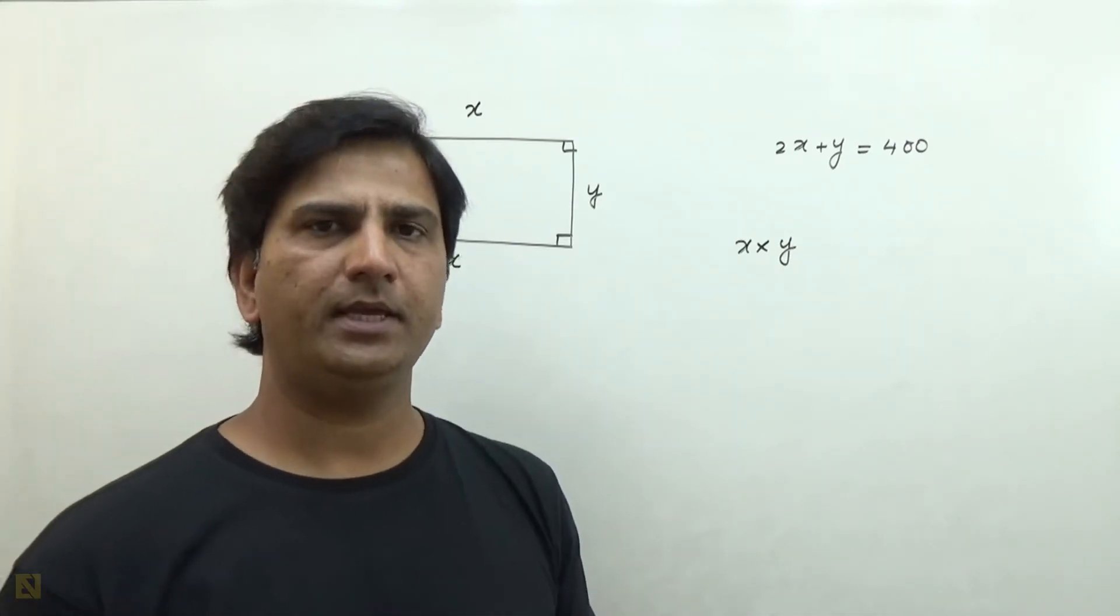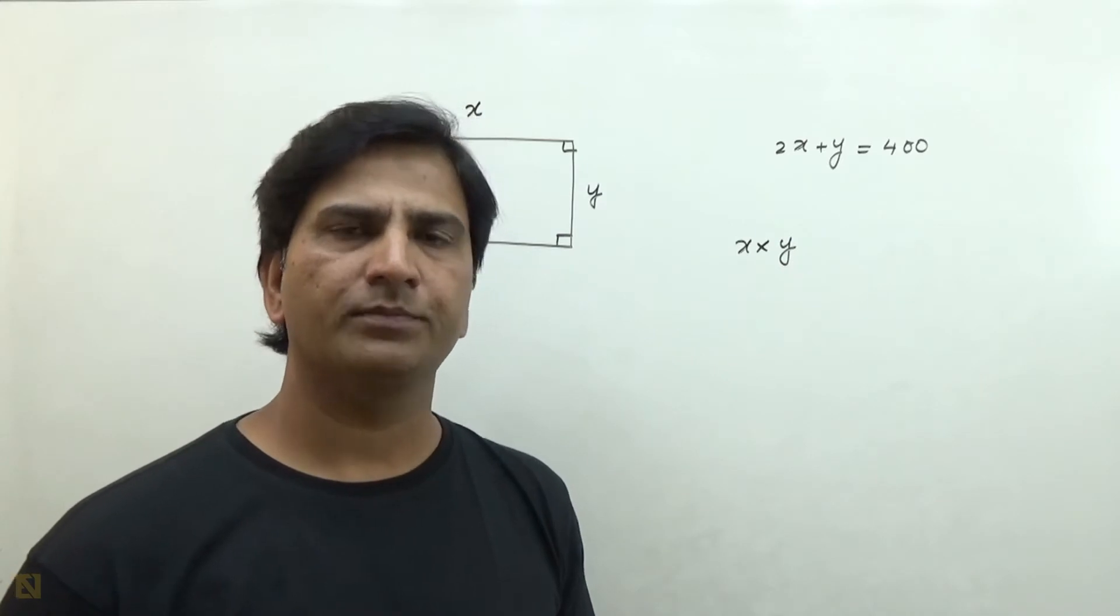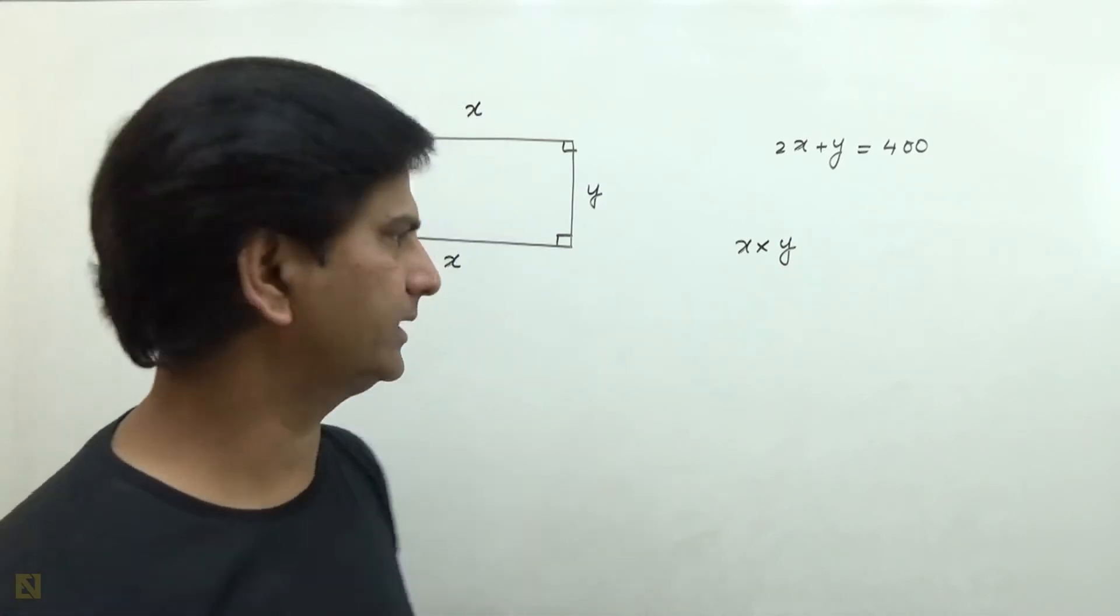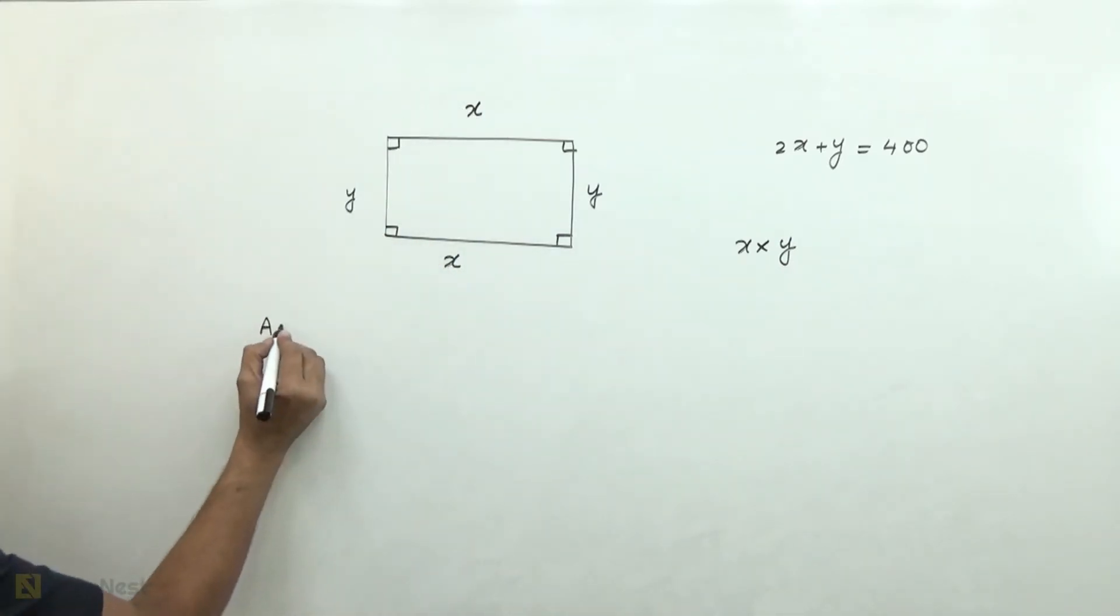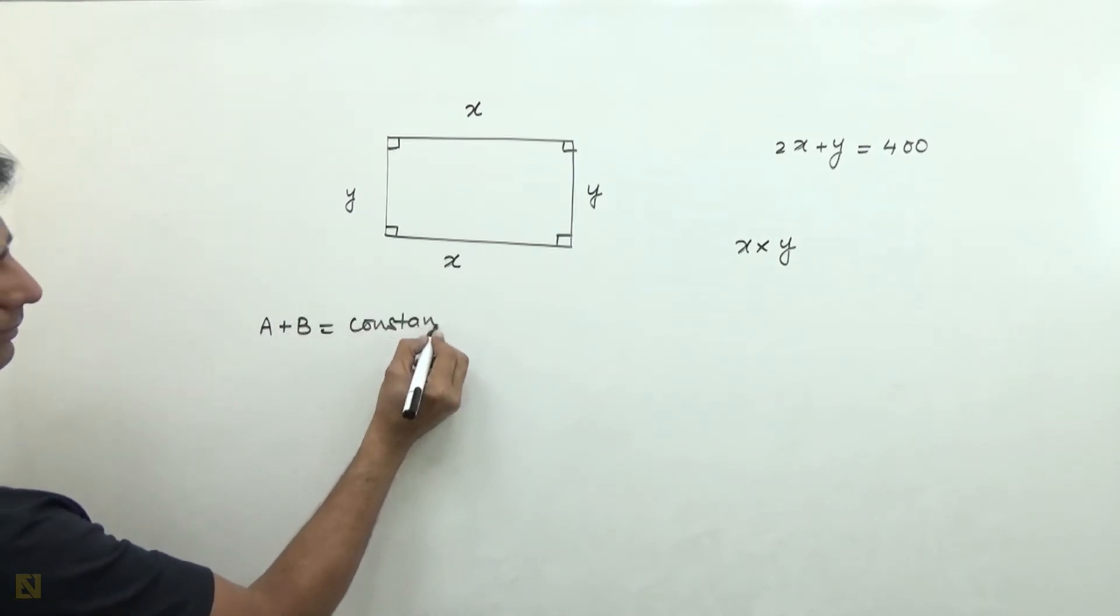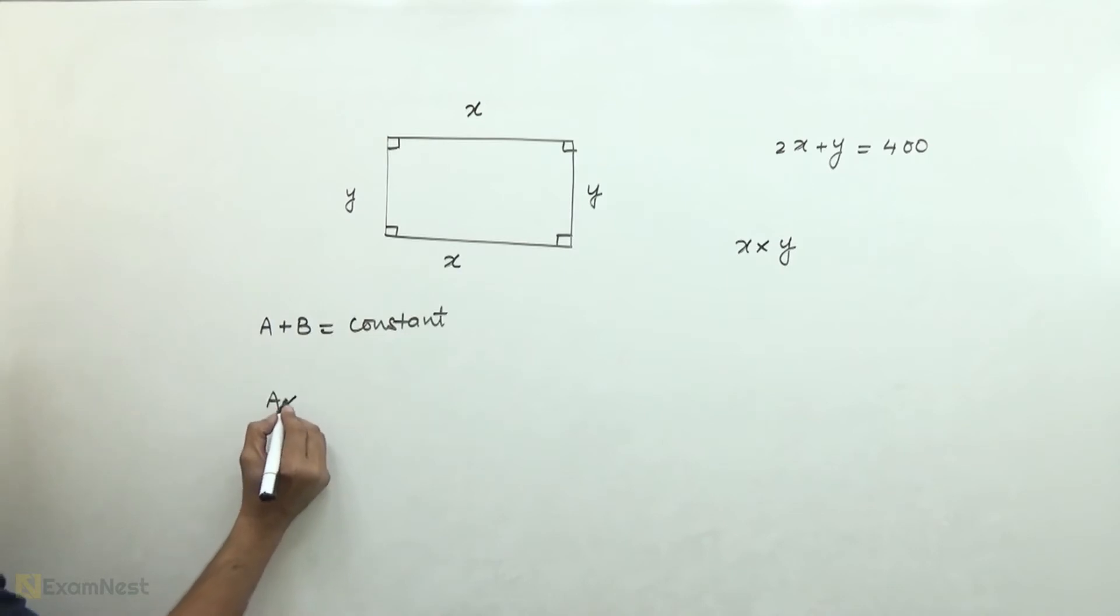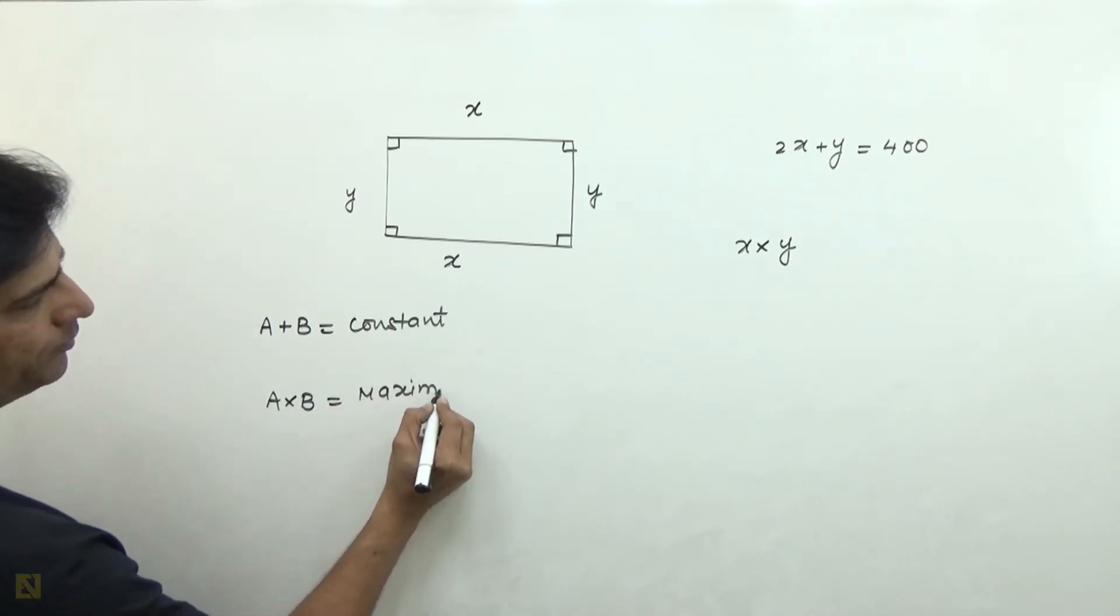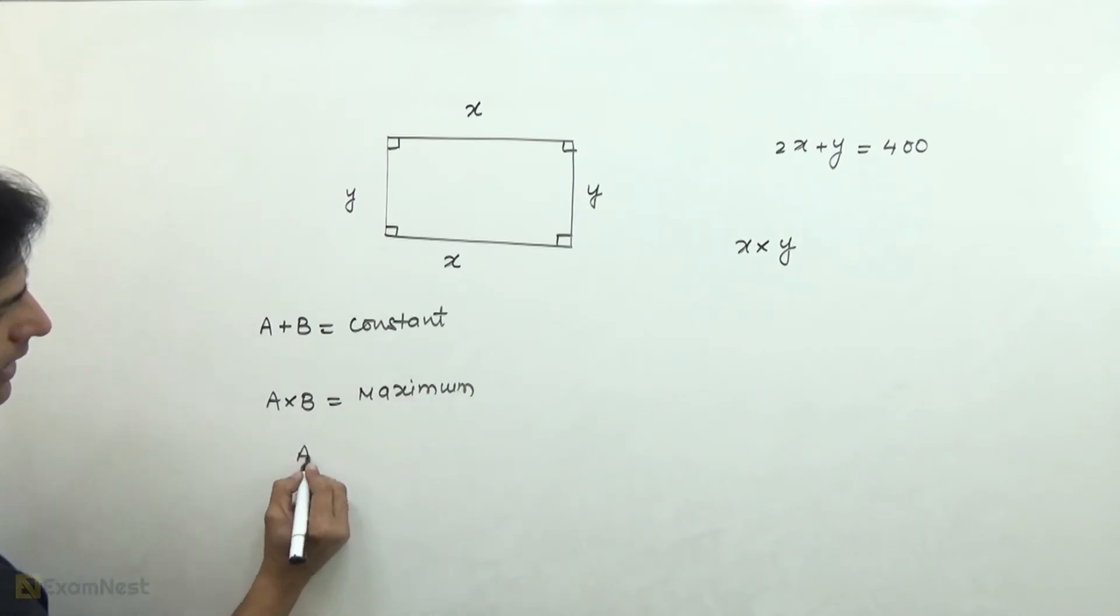Here we need to know one important property when we do maximum and minimum questions. If a plus b is constant, where a and b are positive numbers, then when will the product of a and b be maximum?